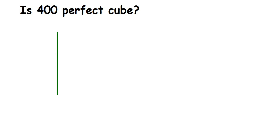I'm going to take 400. 400 is an even number, so I'm going to start with 2. Remember, in prime factorization we have to take only prime numbers. I'm taking 2 because 400 is an even number, so it goes in the 2 times table.